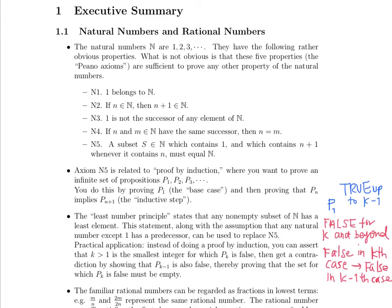If there's a case where it becomes false, and this is the first case where it becomes false — because obviously it's not the base case, which we've already proven is true — but say we have the Kth case as the first case where it's false, we show that if it's false in the Kth case it's going to be false in the K minus 1th case. So it's a little bit backwards work from the proof by induction inductive step. We have a contradiction: the Kth case was supposed to be the first case where it was false, but the K minus 1th case is now a lesser natural number where it is also false. So we know that the statement is true not just for a finite number of cases, but for all cases.